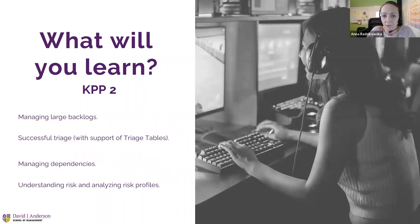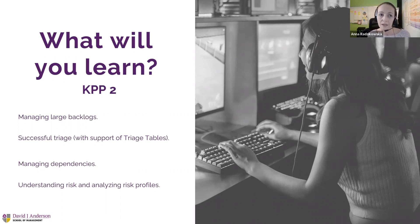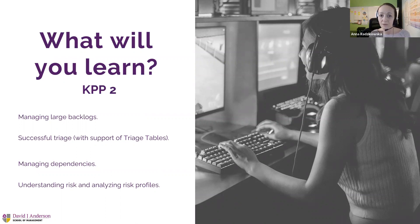In KPP Part 2, you learn about managing large backlogs — one of the common pain points, sometimes with hundreds or thousands of items. We'll help you manage these backlogs and do successful triage at any step of the process: deciding what to do now, next, or not at all, using triage tables or the Mental Triage Decision Support application. We also cover managing dependencies, risk visualization using risk profiles, and analyzing what to invest in or defer.